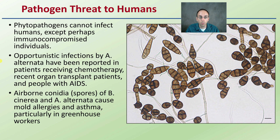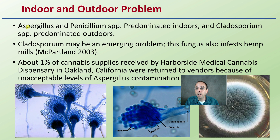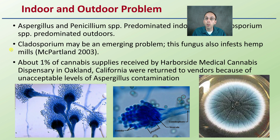This is both an indoor and outdoor problem. Aspergillus and Penicillium are predominant indoors, and Cladosporium is predominant outdoors. If you're growing in an indoor or outdoor location, you may have different microbes of greater concern — but just because you're growing in one environment doesn't mean your cannabis is completely immune to the other. Cladosporium may be an emerging problem; this fungus also infests hemp mills, so even storing the crop can be an area where microbes could take hold and proliferate.